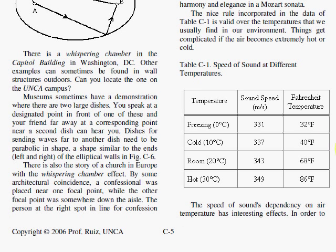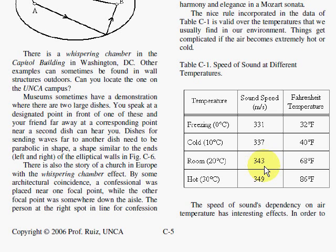For refraction, this deals with the speed of a wave traveling faster in a different medium. The medium could be cooler in one area and hotter in another — still air, but technically different. At freezing temperatures, the speed of sound is 331 meters per second. At room temperature it's 343 meters per second — that's why we give 340 meters per second as the value to remember. At 30 degrees Celsius (86 degrees Fahrenheit), it's 349 meters per second.